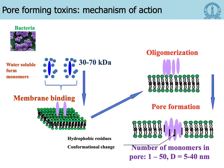Pore-forming toxins are proteins expressed by bacteria to mount an attack on the cell. The bacteria essentially release these proteins in a water-soluble form — I'll be referring to these as monomers — and the size typically varies from 30 to 70 kilodaltons. Upon encountering a membrane, they will bind to the membrane with suitable membrane-binding motifs, undergo a conformational change, oligomerize on the membrane, insert, and form pores. The number of monomers in a pore can range from 1 to 50 and the diameters can range from 5 to 40 nm.